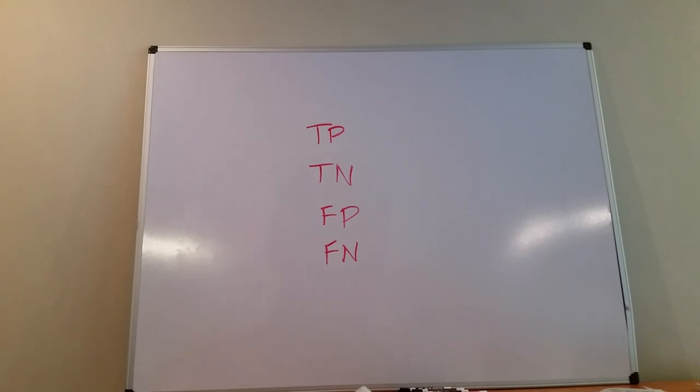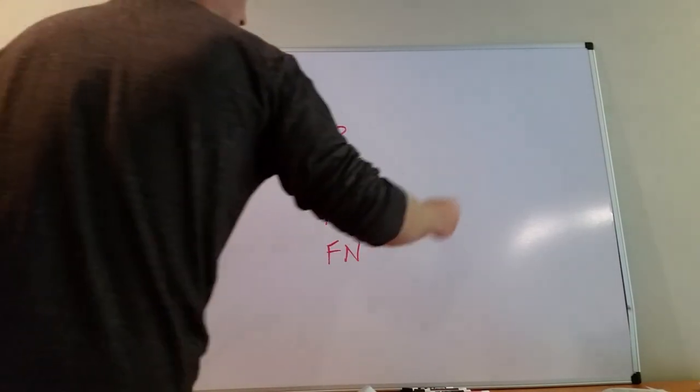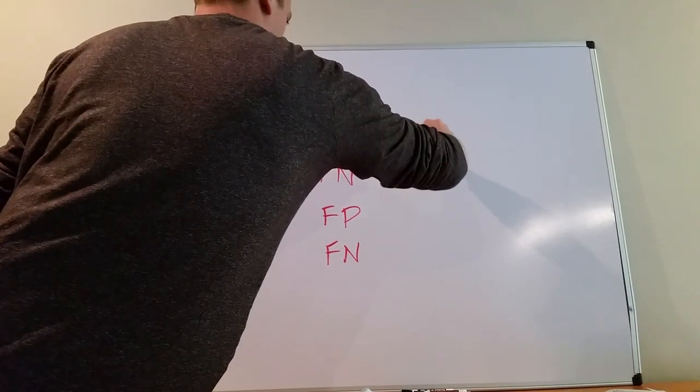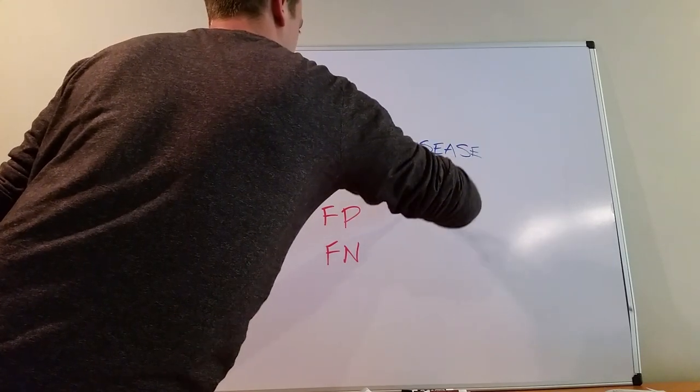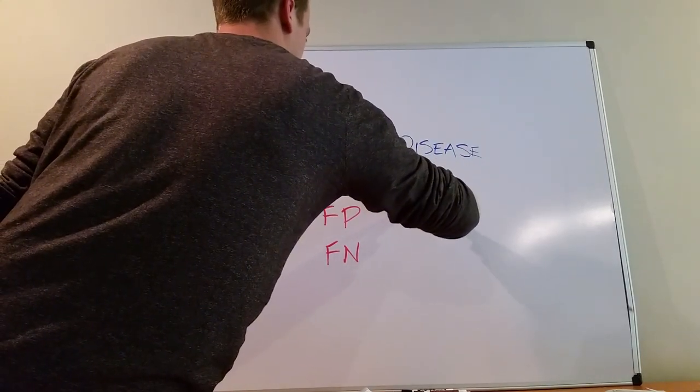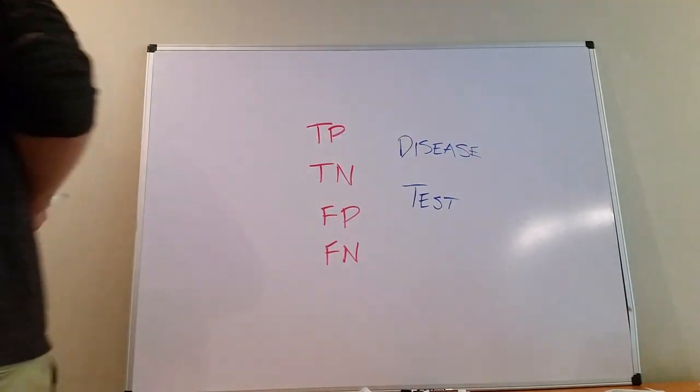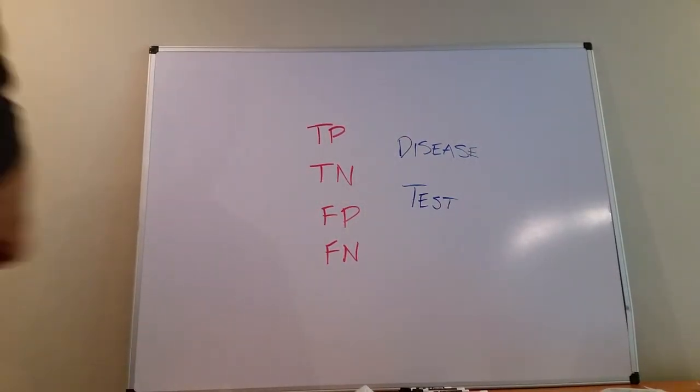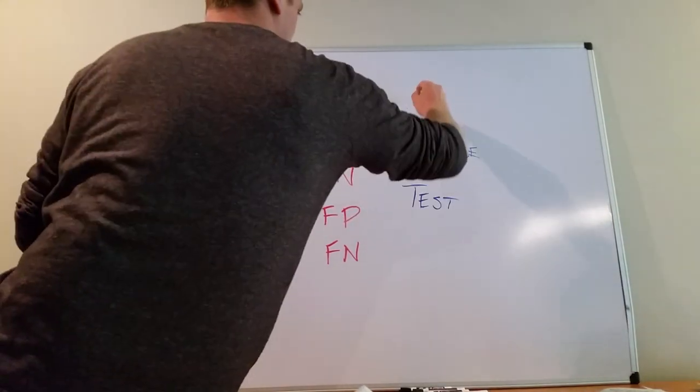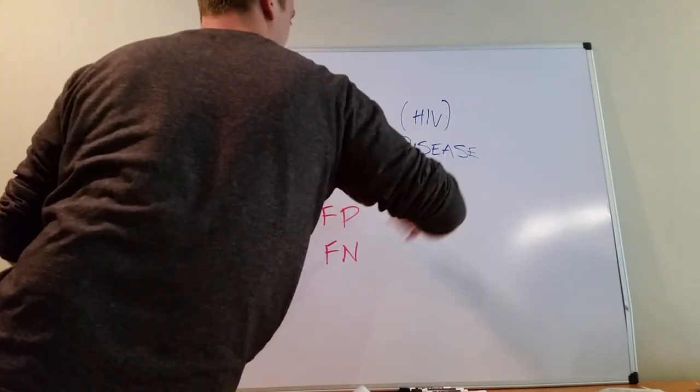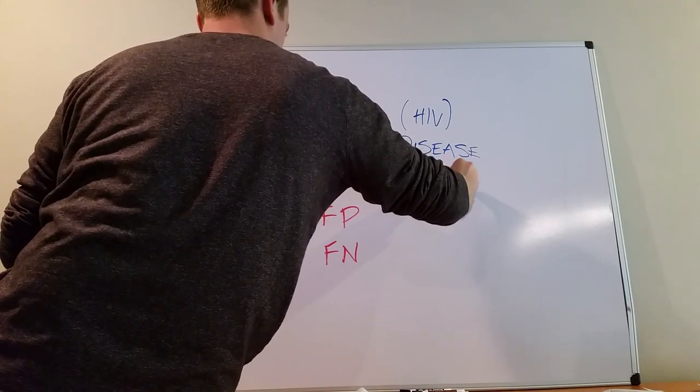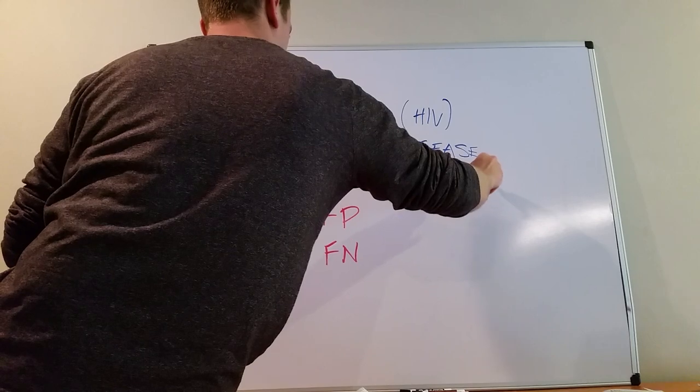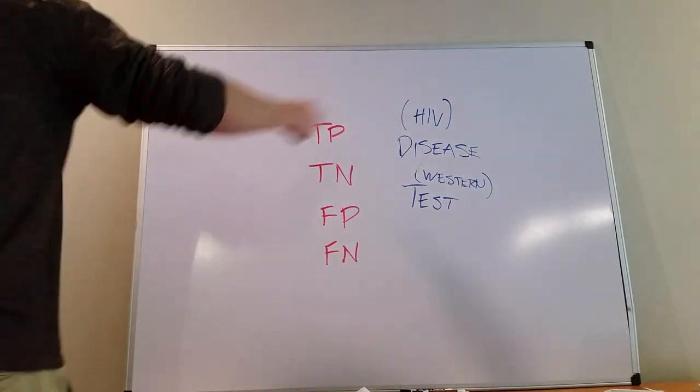Let's go with the true positive and true negative first. What this means is there is a disease process, something that you are testing for, and then there is a test to try and determine if that disease is present. Let's say our disease is HIV and our test is like a Western blot or an ELISA.